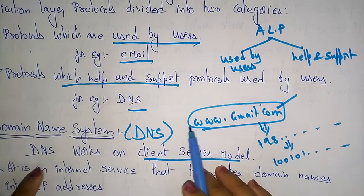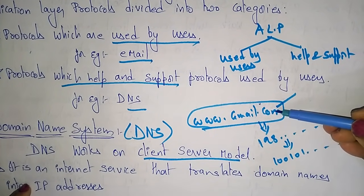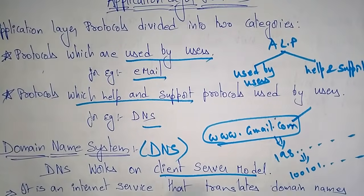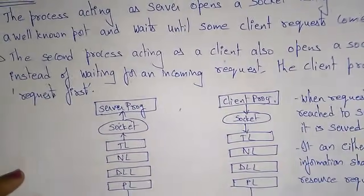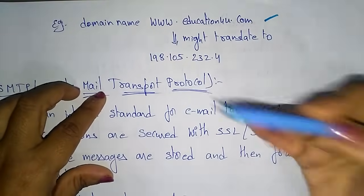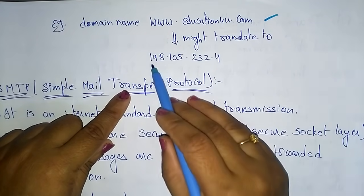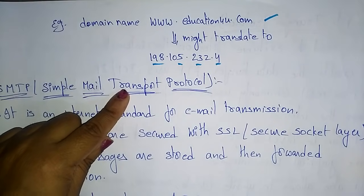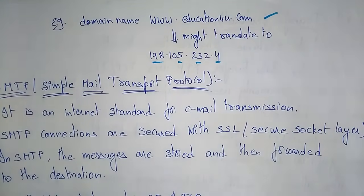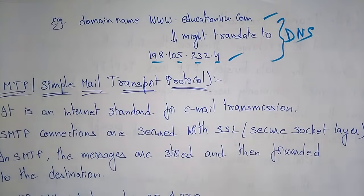DNS works on a client-server model, and it is an internet service that translates the domain name into an IP address. For example, the domain name www.education4u.com might be translated to 181.198.105.232.4. Each octet specifies the address location. So with the help of the Domain Name System, the domain name is translated into an IP address — that is the DNS protocol.